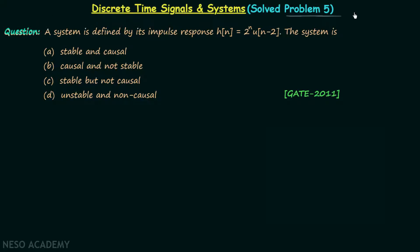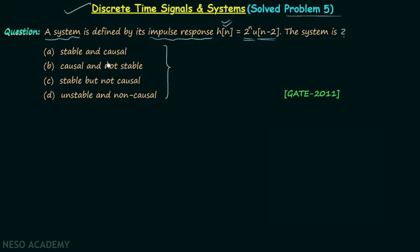We are going to discuss the fifth problem based on discrete time signals and systems. According to the problem, there is a system defined by its impulse response h[n], where h[n] is equal to 2^n multiplied by u[n-2]. The system options are: option A says stable and causal, option B says causal and not stable, option C says stable but not causal, and option D says unstable and non-causal.